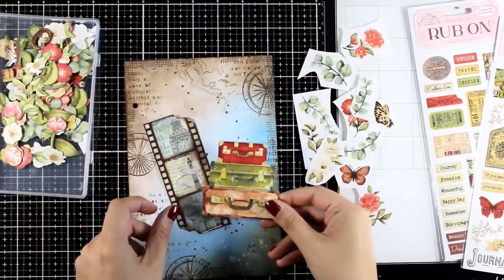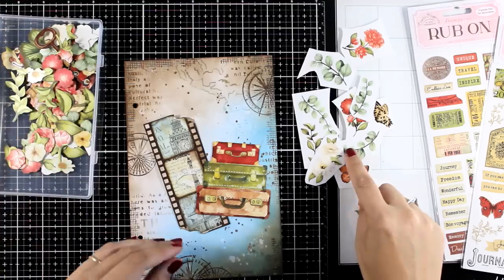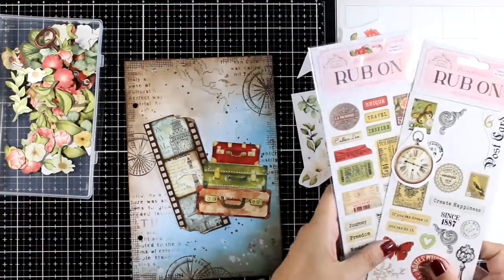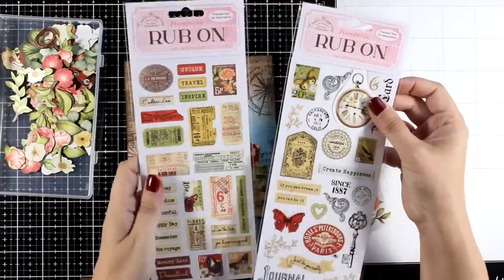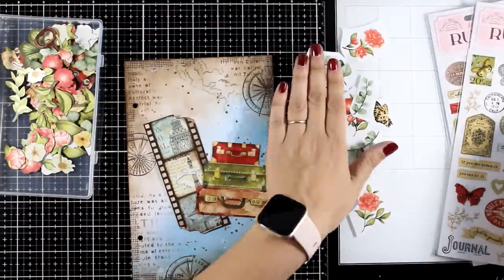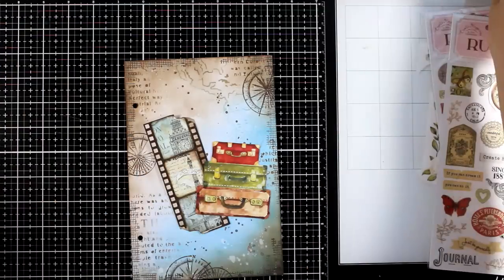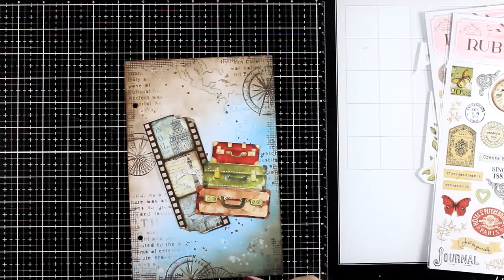Here is step number five of my art journal recipe. Create your composition using ephemera. You can go ahead and cut out images from scrapbook papers. You can embellish them by using rabbons. Use die cuts. Use your dies to cut out elements that you like. Just be creative and make a fun composition on top of your page.